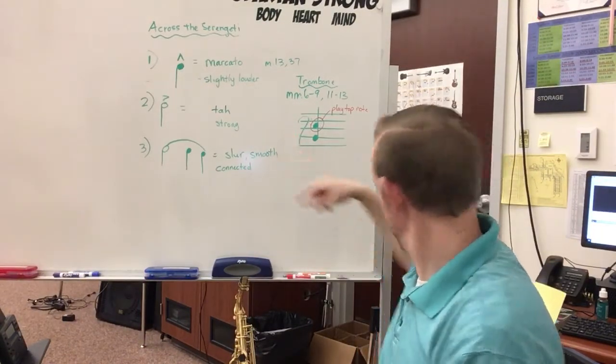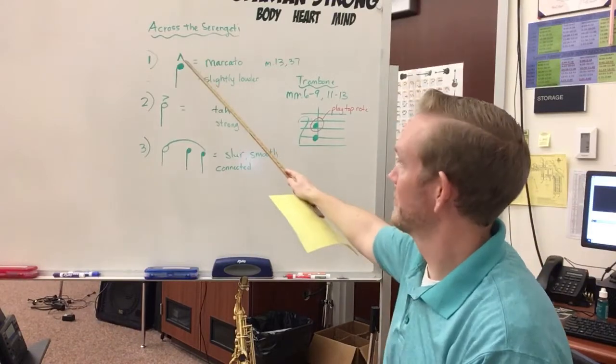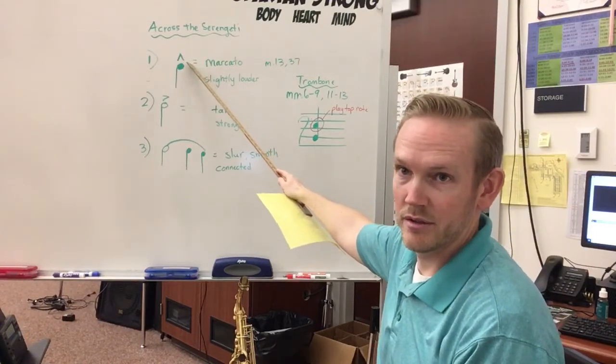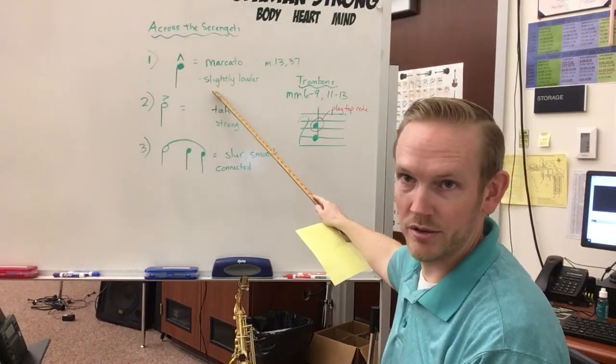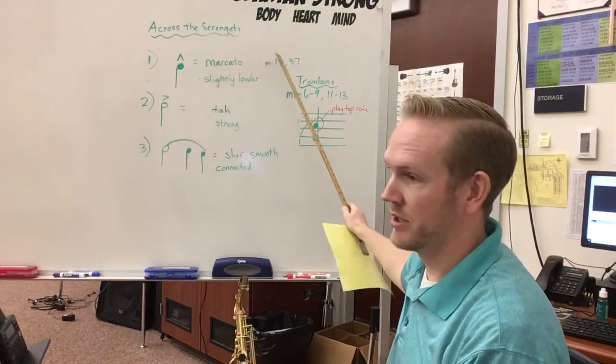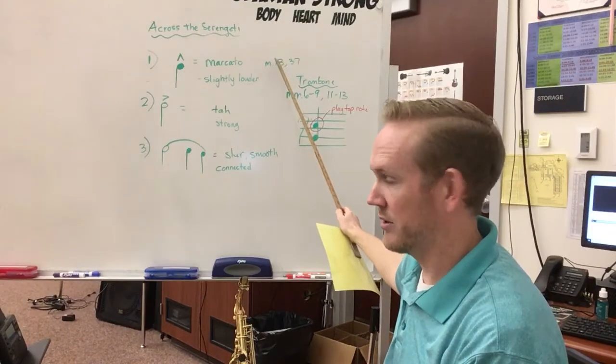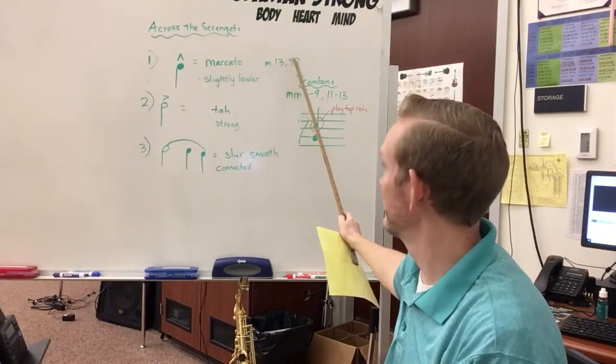First thing you want to look at is this different marking. It's called a marcato. It's this pointy top. It means you're going to play just a little louder and shorter than you usually would. And you see that particularly in measure 13 and measure 37.